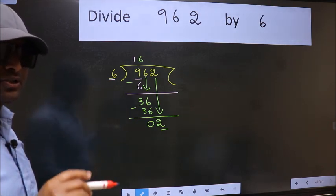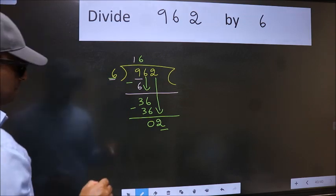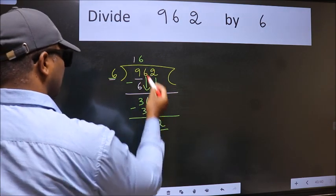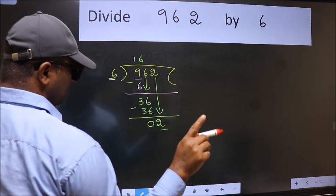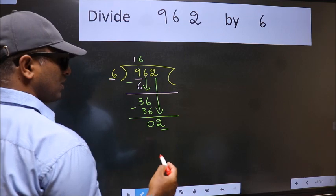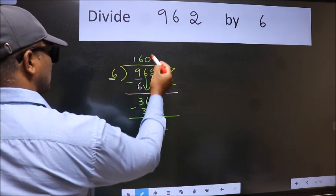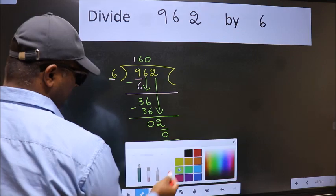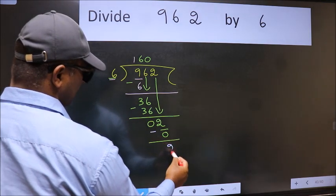Instead of that, what you should think of doing is, which number should we take here? If I take 1, we will get 6. But 6 is larger than 2. So what we do is, we take 0. So 6 into 0, 0.